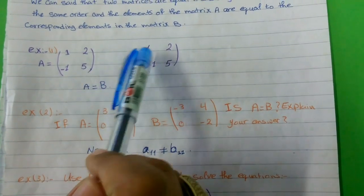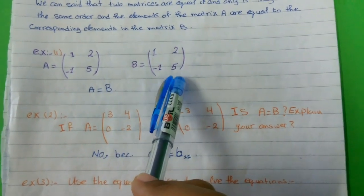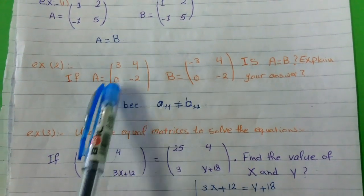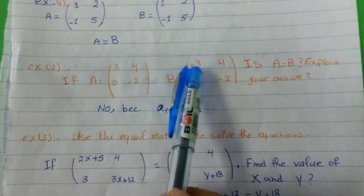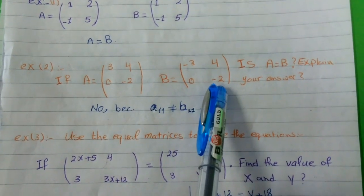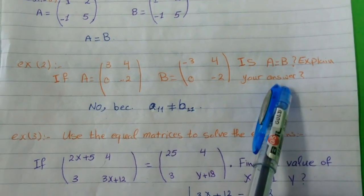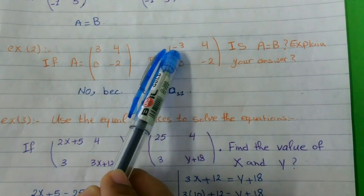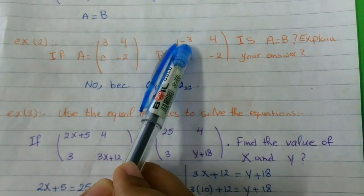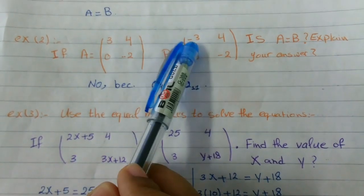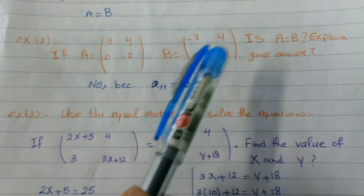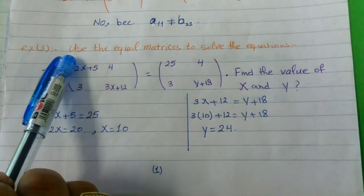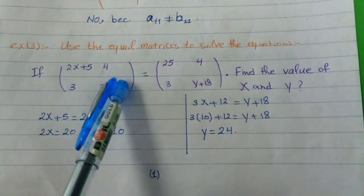For example: 1, 2, negative 1, 5 equals 1, 2, negative 1, 5. Now, given A = [3, 4, 0, negative 2] and B = [negative 3, 4, 0, negative 2], is A equal to B? Look at the first element: A(1,1) is 3 and B(1,1) is negative 3. Because they are not equal, A does not equal B.